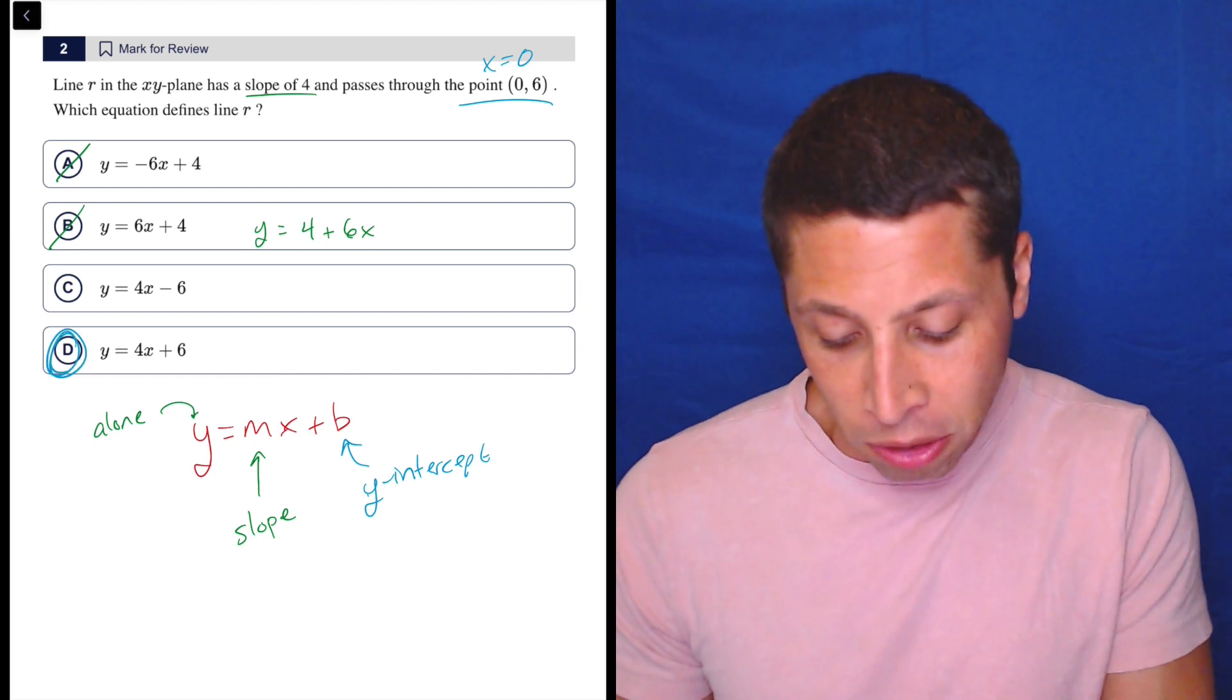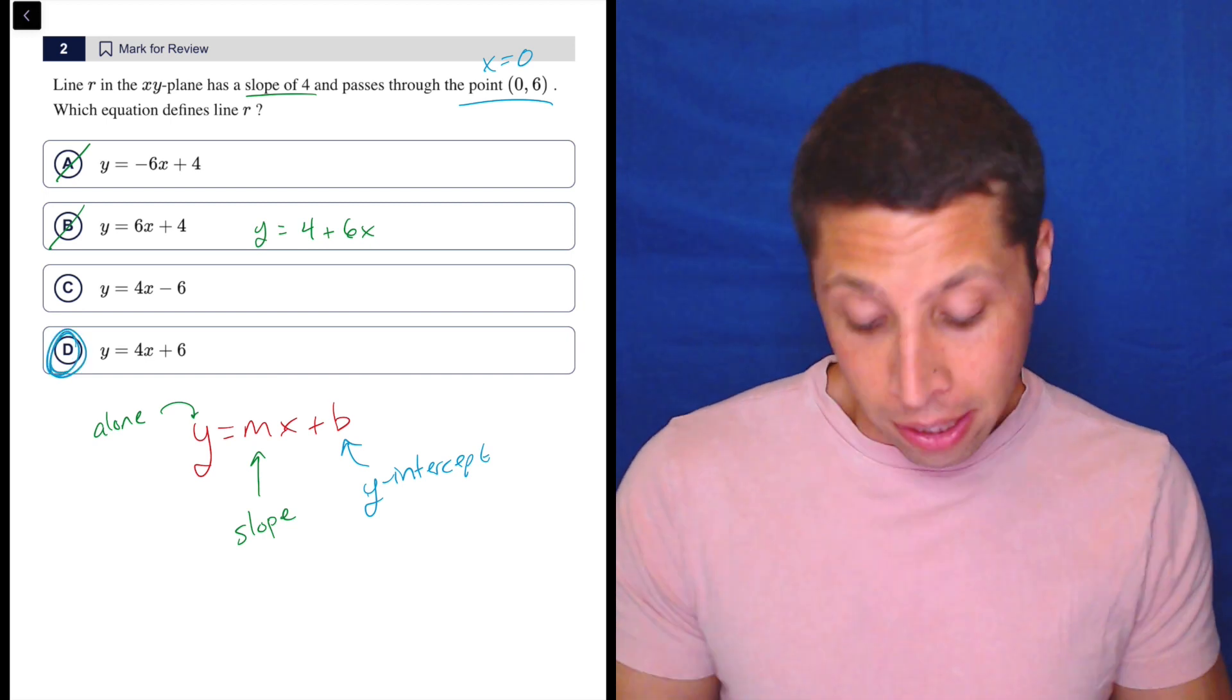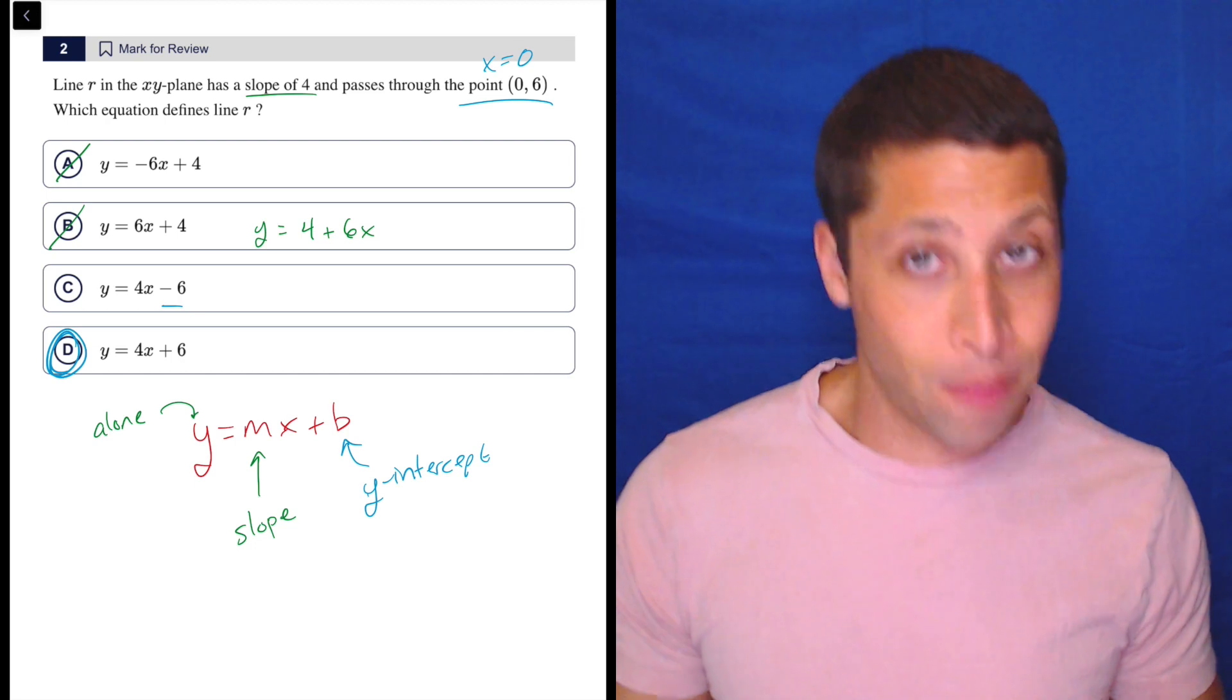And so we can also see then just from there that choice d has to be the answer because that has a plus 6. Minus 6, not the same thing.